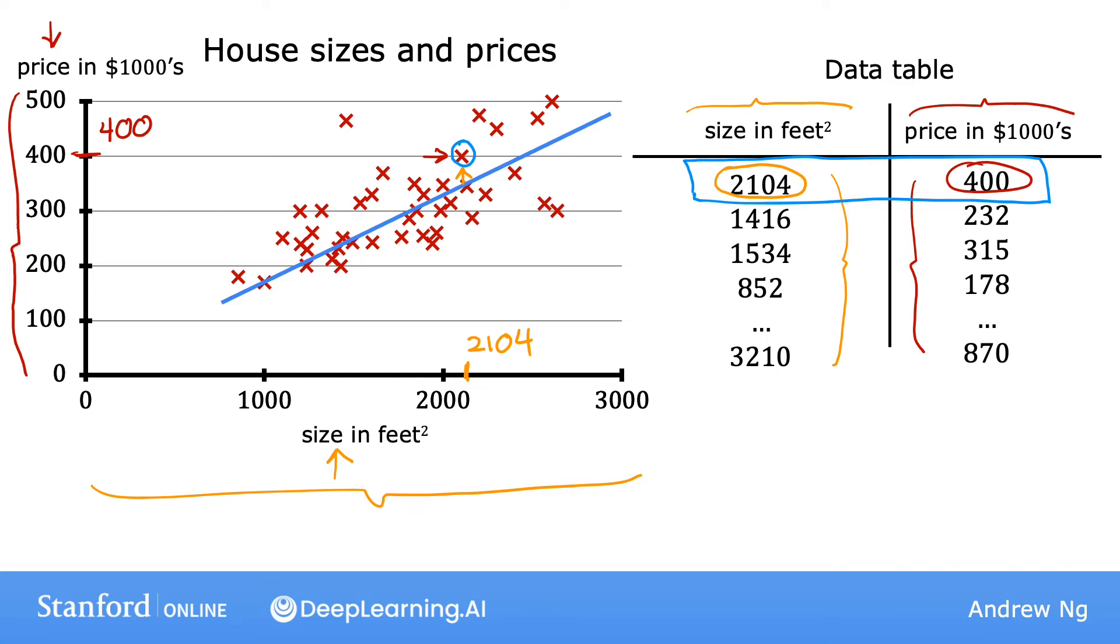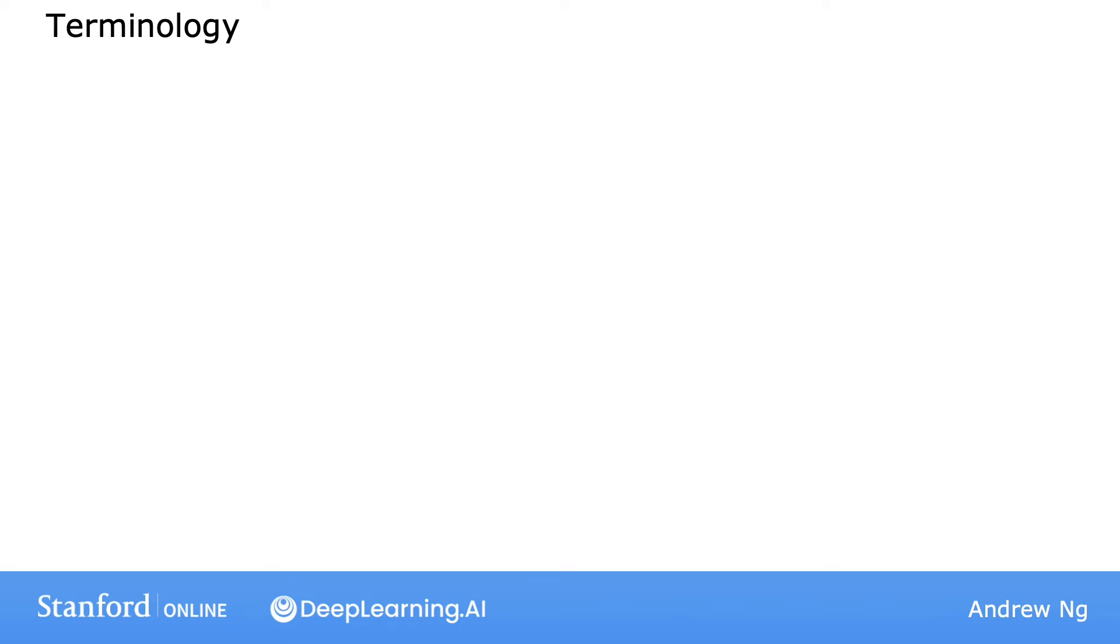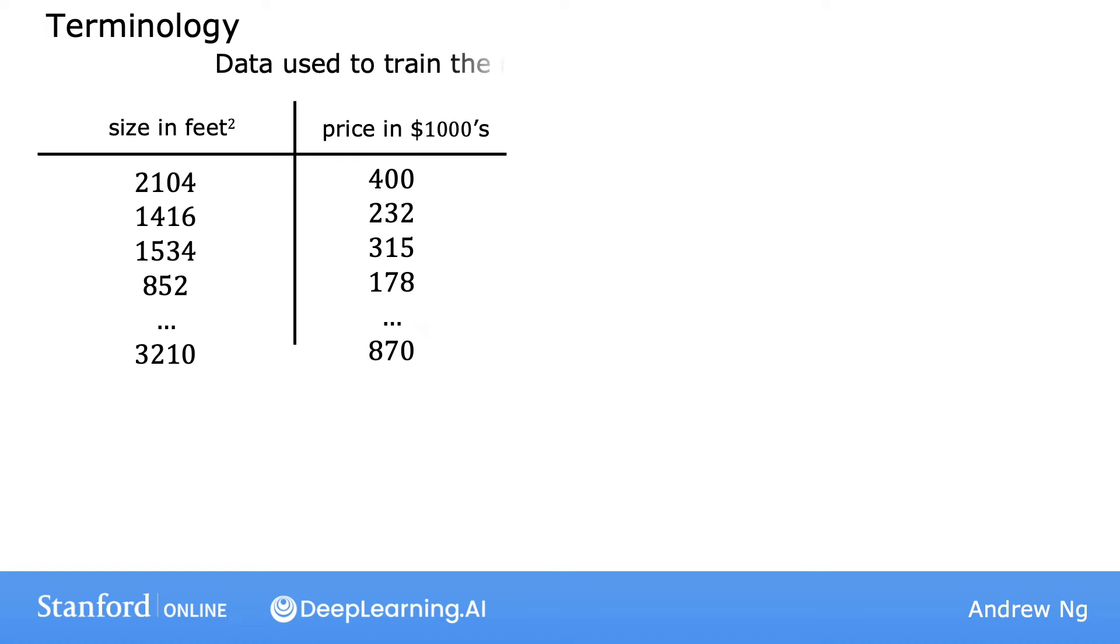Now, let's look at some notation for describing the data. This is notation that you'll find useful throughout your journey in machine learning. As you increasingly get familiar with machine learning terminology, this would be terminology that you can use to talk about machine learning concepts with others as well, since a lot of this is quite standard across AI. You'll be seeing this notation multiple times in the specialization, so it's okay if you don't remember everything the first time through. It will naturally become more familiar over time. The data set that you just saw and that is used to train the model is called a training set. Note that your client's house is not in this data set because it's not yet sold, so no one knows what this price is. So to predict the price of your client's house, you first train your model to learn from the training set, and that model can then predict your client's house's price.